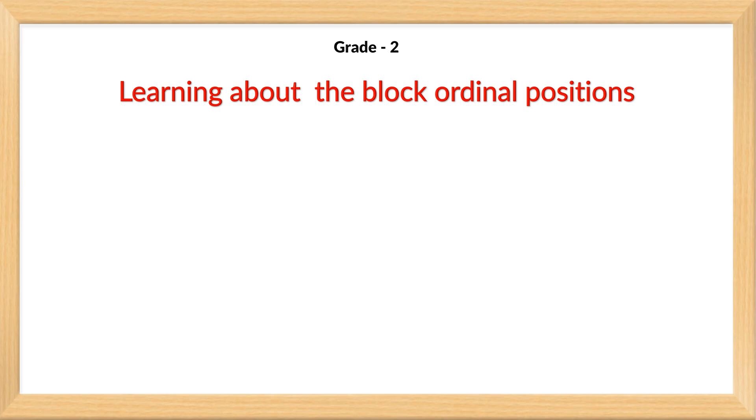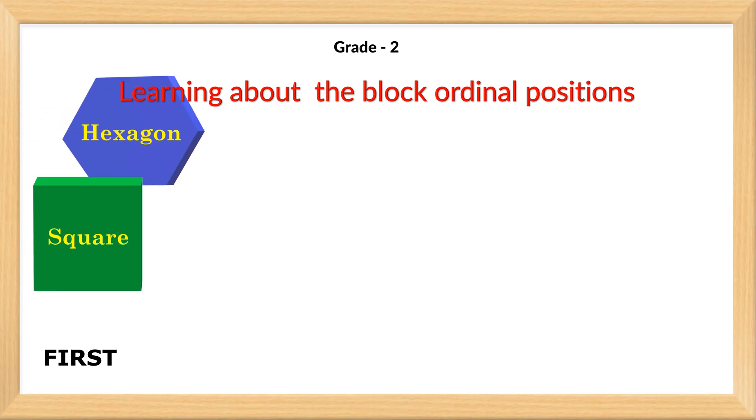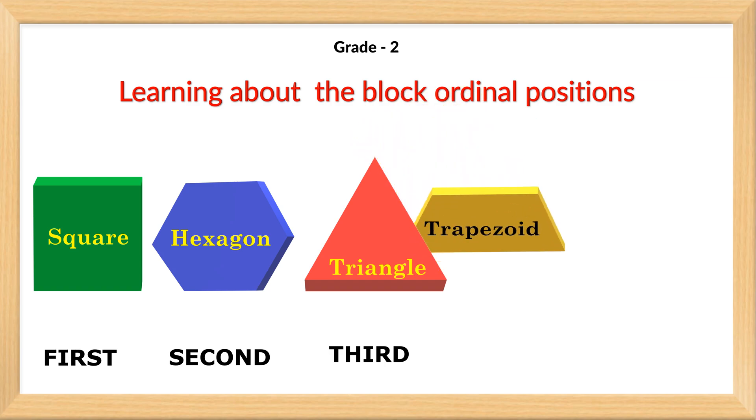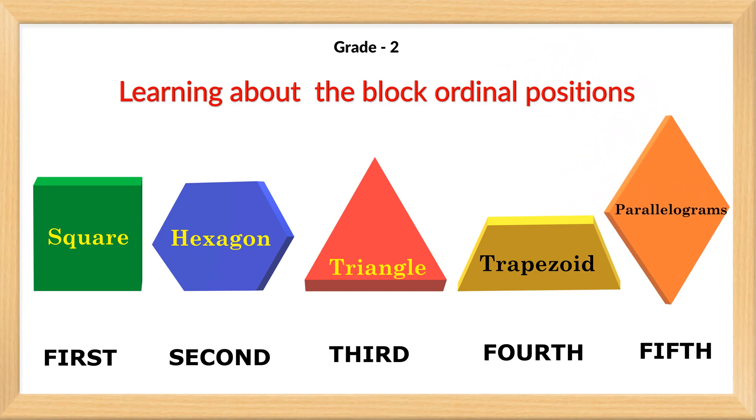Learning about the block ordinal positions. Here we go. Put the green square in the first position, put the blue hexagon in the second position, put the red triangle in the third position, put the yellow trapezoid in the fourth position, then put the orange parallelogram in the fifth position. Great job.